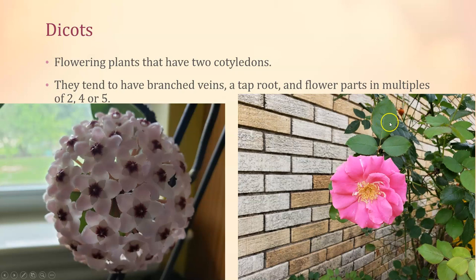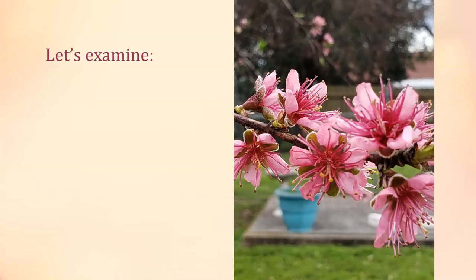Dicot flower parts tend to be in multiples of two, four, or five. This huella plant has five petals — that makes it a dicot. You could count petals on a rose too — the primitive ancestor to a rose had five petals, making it a dicot. So both the venation and the number of flower parts help identify dicots.